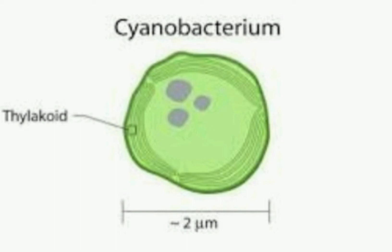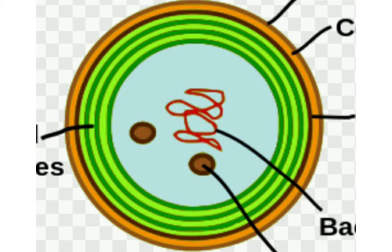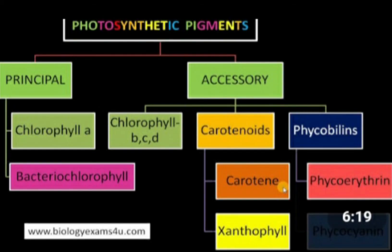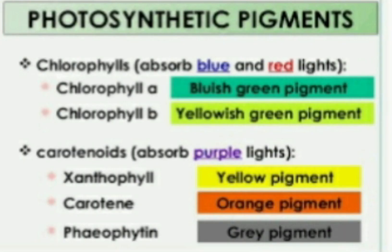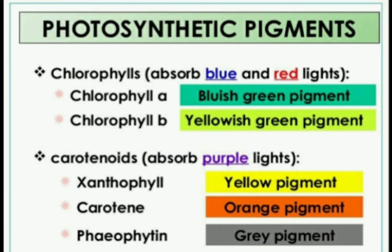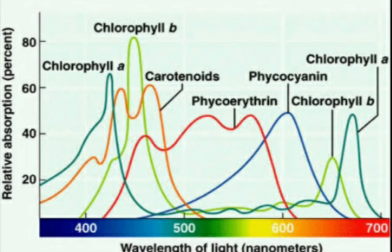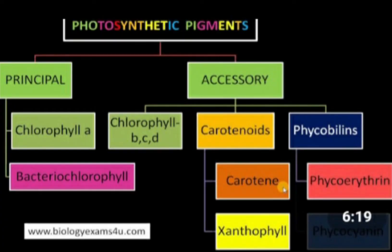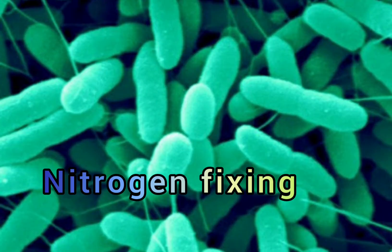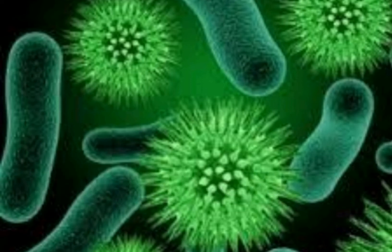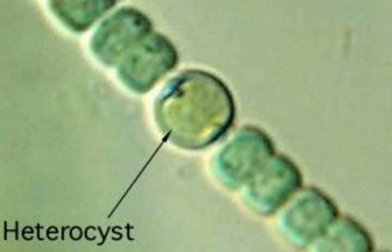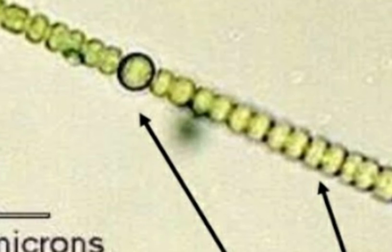The pigments present in cyanobacteria are chlorophyll A, beta carotene, myxoxanthophyll, myxoxanthine, C-phycoerythrin, and C-phycocyanin. Phycocyanin is present in greater amount than phycoerythrin, giving the bacteria its characteristic blue-green colour. Some cyanobacteria can fix atmospheric nitrogen. They have a special structure called a heterocyst, which makes the cell wall so thick that it is impermeable to oxygen. These heterocysts are the site of nitrogen fixation.